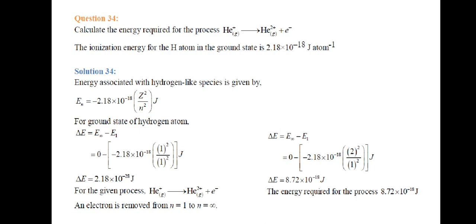The energy associated with hydrogen-like species is given by Eₙ = −2.18 × 10⁻¹⁸ × Z²/n² joules. Here we put the values of Z and n for hydrogen: Z = 1 and n = 1 for ground state. So it becomes ΔE = 2.18 × 10⁻¹⁸ joules.